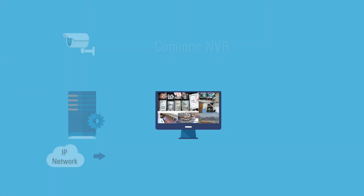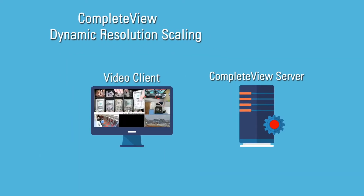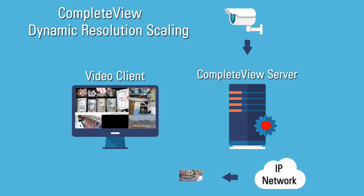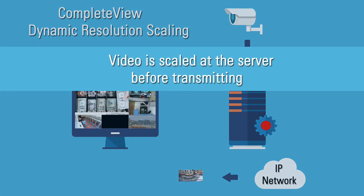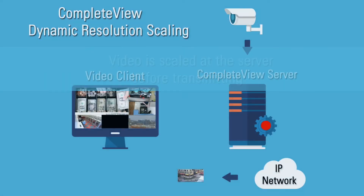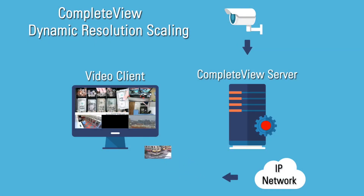CompleteView's process works in much the same way with one key difference. CompleteView's server will receive video from an IP or analog camera at high resolution for recording. When a client application requests live video, CompleteView scales the resolution down at the server before transmitting it over the network, so bandwidth is not consumed by transmitting high resolution video, which is then scaled down to a low resolution to fit on the screen.